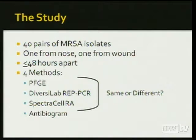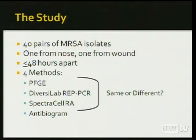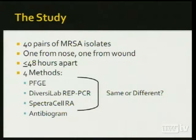Our study comprised 40 pairs of MRSA isolates — one from the nose and one from the wound. Context being important, we set our temporal correlation at less than 48 hours. We looked at these isolates using four methods: pulse field, the Diversalab REP-PCR method, the SpectraCell Raman method, and the antibiogram. We asked a simplified question: are the isolate pairs the same or different? We didn't initially ask whether the methods placed all bugs in the same clonal groups — just how they dealt with the pairs.